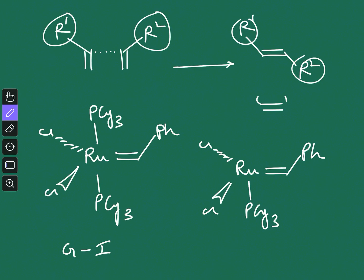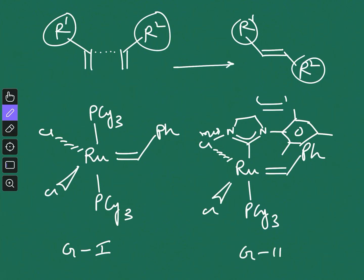In the second-generation catalyst, one PCy3 is replaced by an N-heterocyclic carbene with two mesityl groups attached. This is the Grubbs second-generation catalyst. Both catalysts do the same work, but there are some advantages of the second-generation catalyst over the first generation.